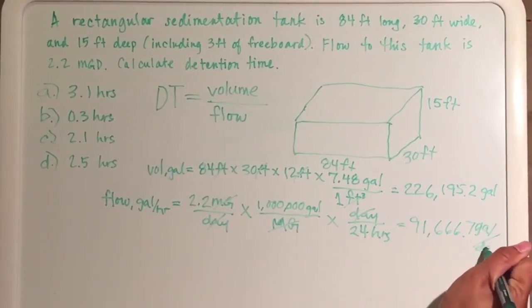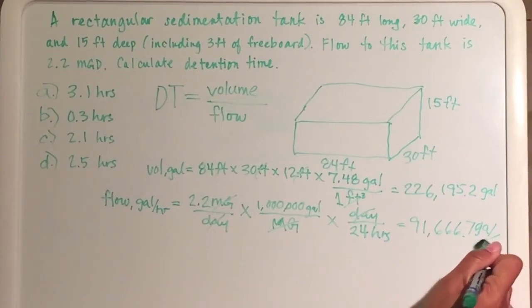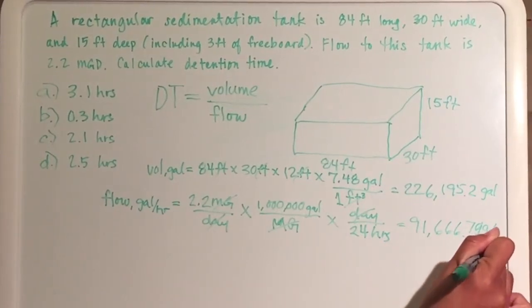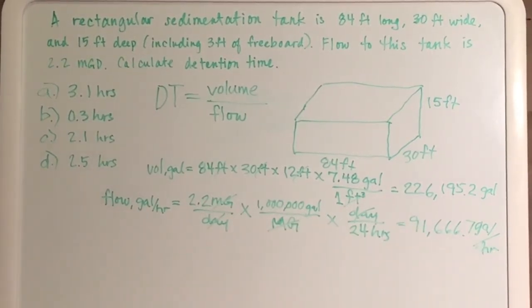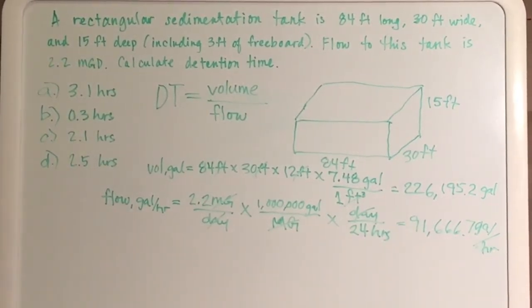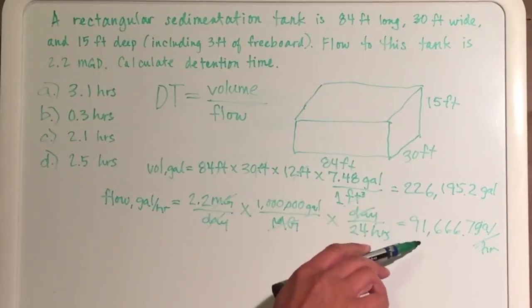We'll cancel that out and all we're left with is gallons per hour, which will equal 91,666.7 gallons per hour. Then all you do is divide this number by this number.